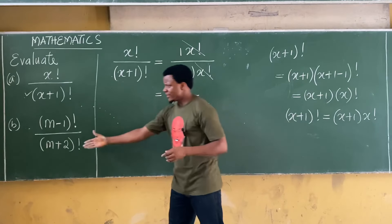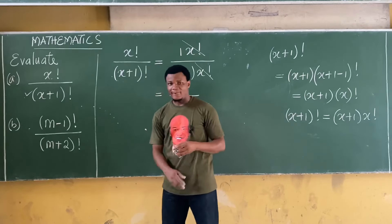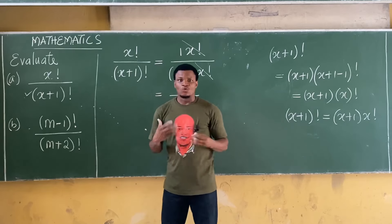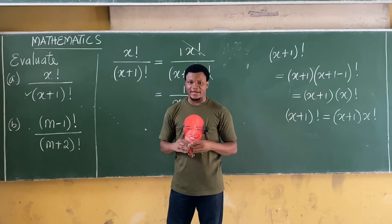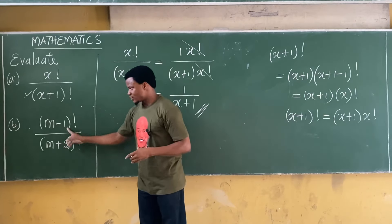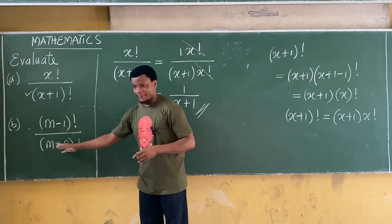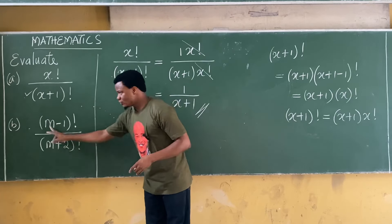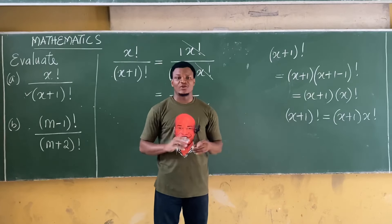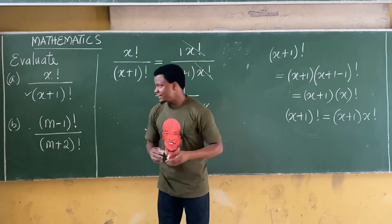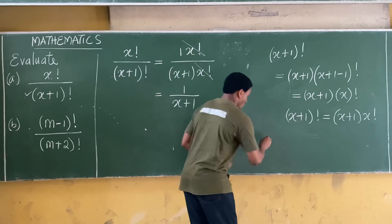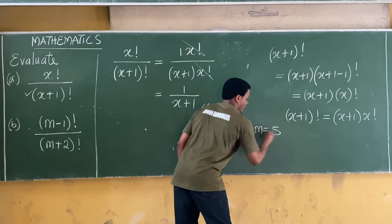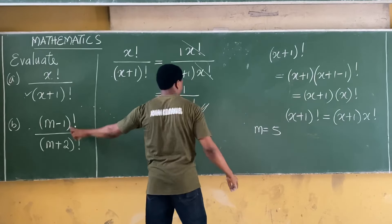Now here's the next part: between the numerator and denominator, which is bigger — (m−1)! or (m+2)!? Here's a hint: assume m to be any number. Let's take m = 5.